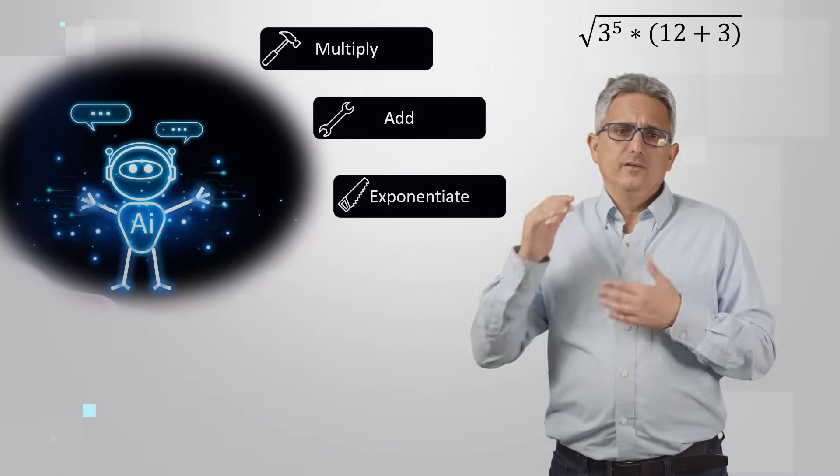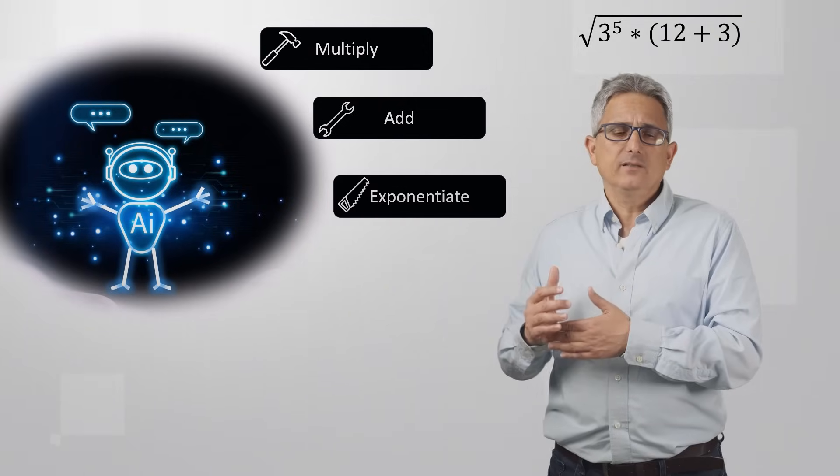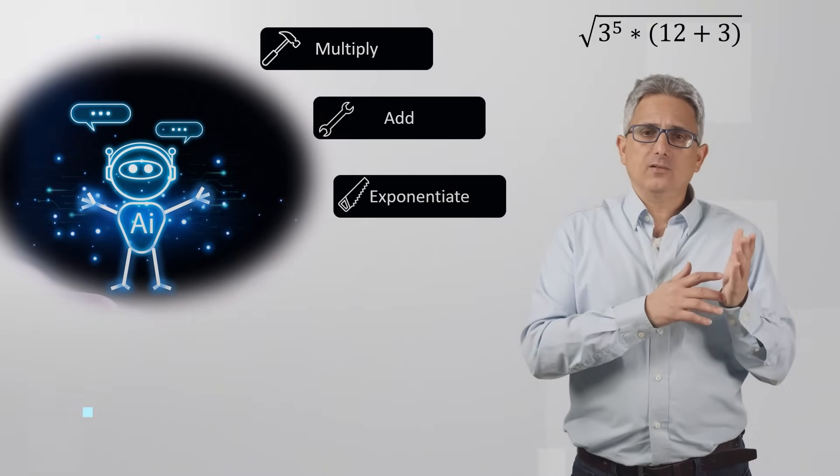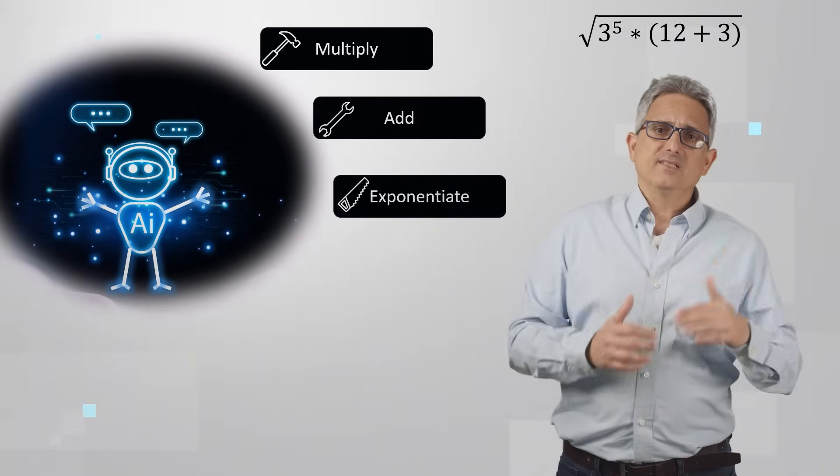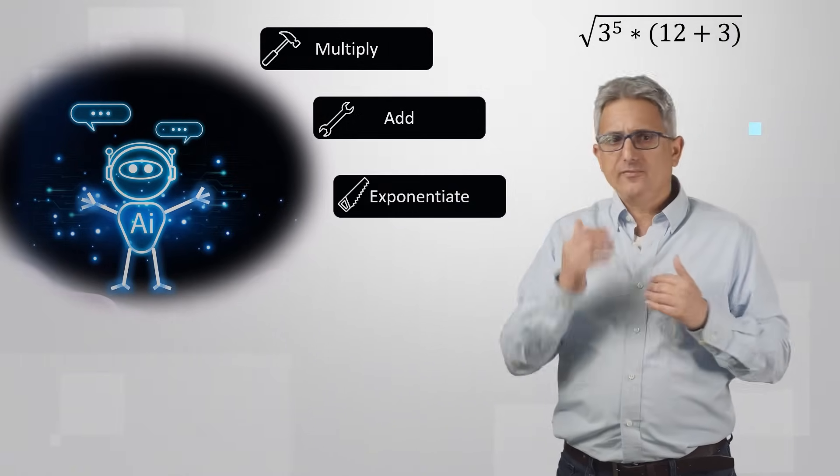For example, here, first use the exponentiate tool to calculate 3 to the power of 5. Then, use the add tool to calculate 12 plus 3. Then, use the multiply tool and so on until you got the final result.